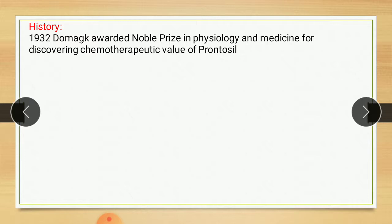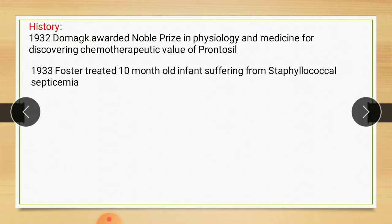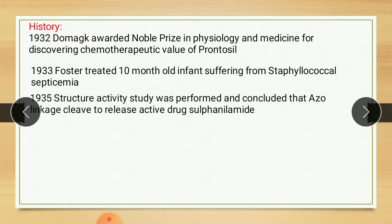Prontocil was found to protect against and cure streptococcal infection in mice. Interestingly, Prontocil was inactive on bacterial culture. In 1933, the first of many cures of severe bacterial infection in humans was reported by Foster, who treated a 10-month-old infant suffering from Staphylococcal septicemia with Prontocil. Prontocil is totally inactive in vitro but possesses excellent activity in vivo.